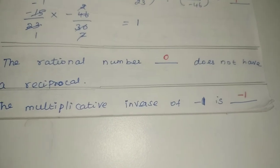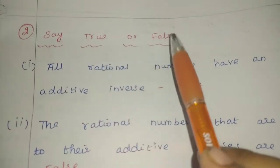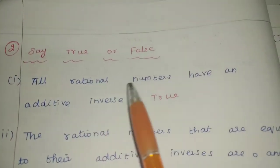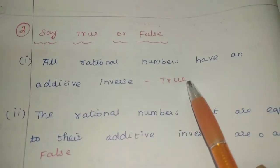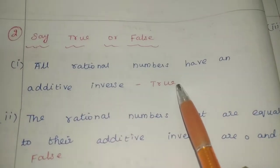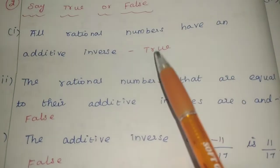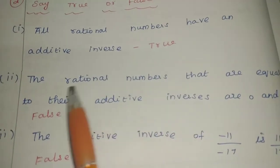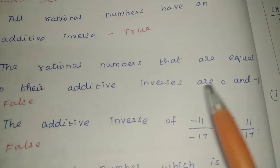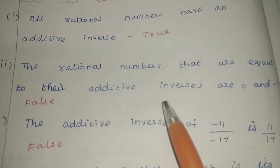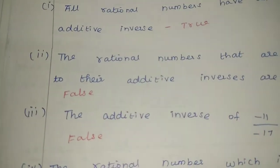Second part is true or false. The statement says: all rational numbers have an additive inverse. Yes, the statement is correct — all rational numbers have an additive inverse. That is true. The next statement: the rational number equal to its own additive inverse is 0 and minus 1. But 0 equals minus 1 is not the same condition, so the answer is false.